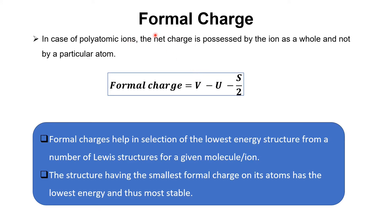Now let's understand non-equivalent structures and how formal charge helps in deciding which structure is the most appropriate Lewis diagram for an ion or molecule. In the case of polyatomic ions — ions with two or more atoms — the net charge is possessed by the ion as a whole, not by a particular atom. For example, in CO3²⁻, the two-negative charge belongs to the whole ion. Formal charge can be calculated as V − U − S/2, where V is the number of valence electrons, U is the number of unshared electrons, and S is the number of shared electrons for a particular atom.